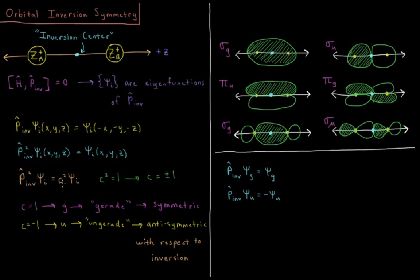The inversion operator squared acting on a molecular orbital gives me the same molecular orbital back. So P_inv squared acting on psi_i equals c squared psi_i. So this gives back the same wave function. So the eigenvalues of P_inv squared have to be one. So the eigenvalues of the original inversion operator are going to be plus and minus one.